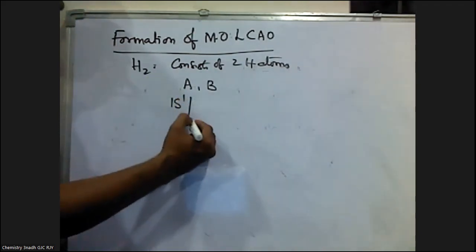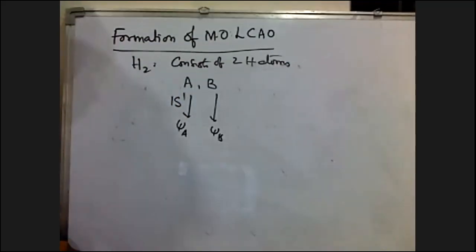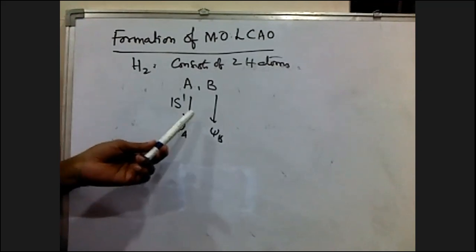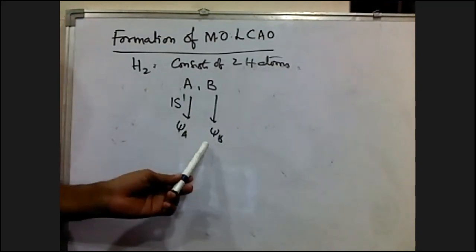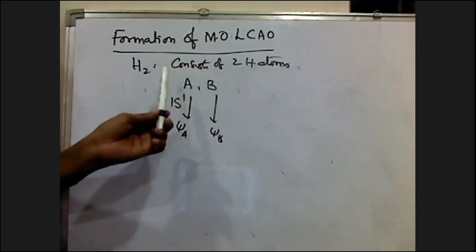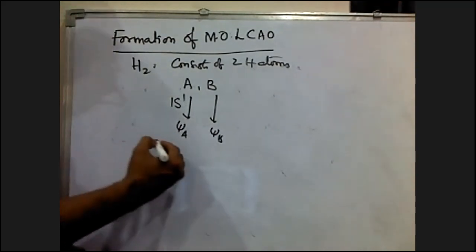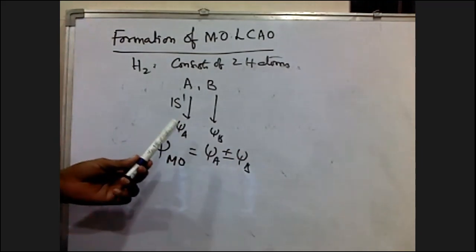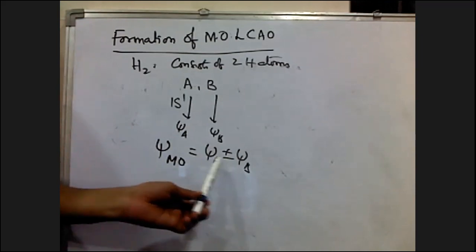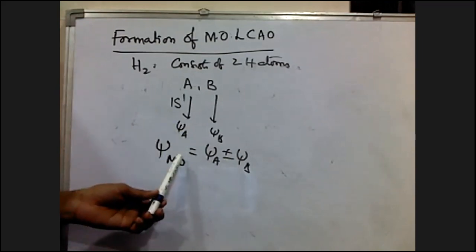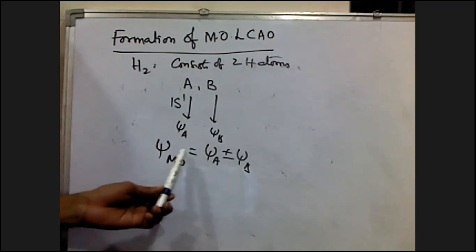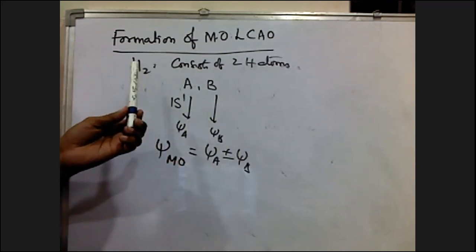The atomic orbitals of the two hydrogen atoms are represented by wave functions psi-A and psi-B. Psi-A and psi-B are the wave functions of the atomic orbitals present in hydrogen atoms A and B. Mathematically, the formation of molecular orbitals is represented as: psi(MO) = psi-A ± psi-B. This gives two molecular orbitals: sigma (σ) = psi-A + psi-B, and sigma-star (σ*) = psi-A − psi-B.